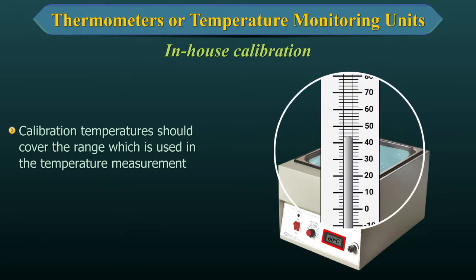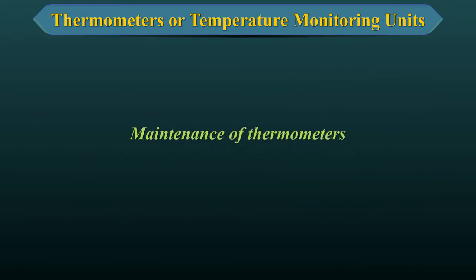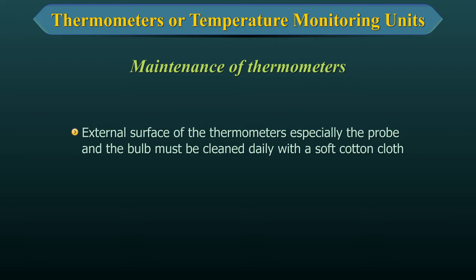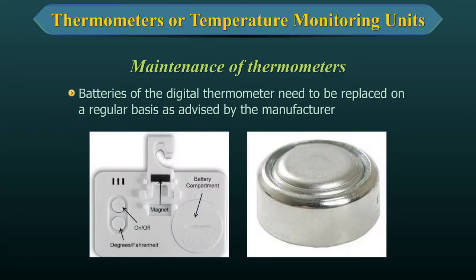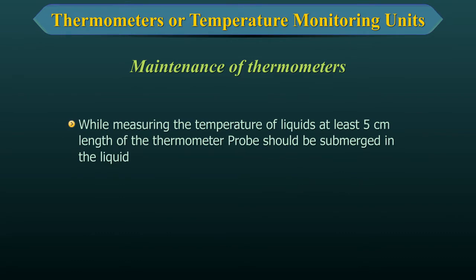Maintenance of Thermometers. The external surface of the thermometers, especially the probe and the bulb, must be cleaned daily with a soft cotton cloth. The batteries of the digital thermometer need to be replaced on a regular basis as advised by the manufacturer. While measuring the temperature of liquids, at least 5 cm length of the thermometer probe should be submerged in the liquid.